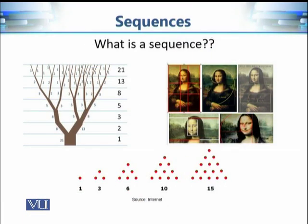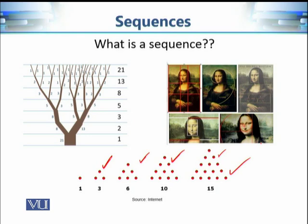What is a sequence? A sequence is any collection of objects, events, or numbers that has some pattern that we can find. Sometimes it is difficult to find the pattern, but if we can find it then we say that it's a sequence. For example, consider the numbers one, three, six, ten, fifteen. They appear to be very random integers, but in fact they are related to triangular diagrams — one is the number of dots in this triangle, six is the number of dots in this triangle, ten is the number of dots in this triangle, and so on.